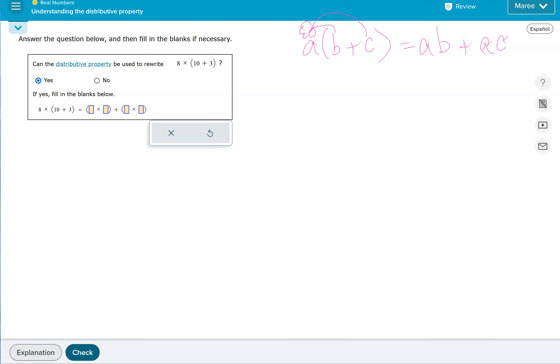We're having 8 times each of what's inside. So we have the 10 and then we have the 3. See how we broke that up.